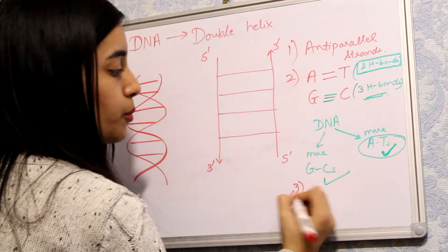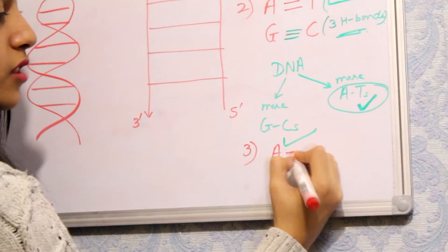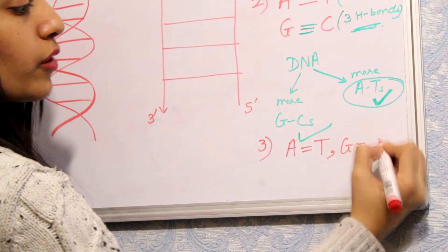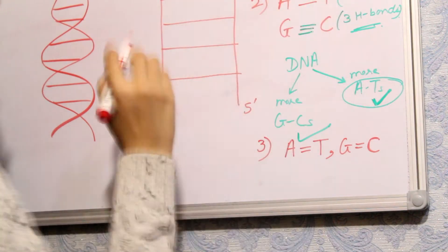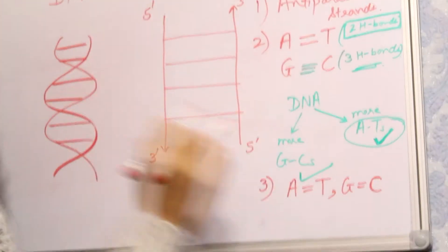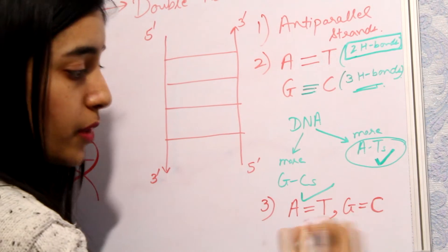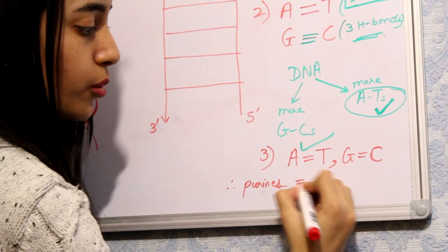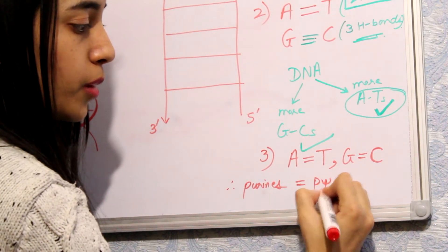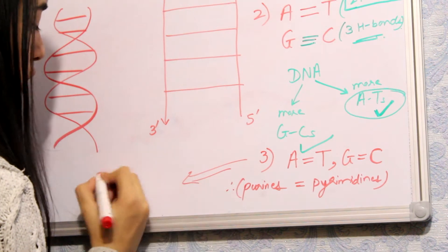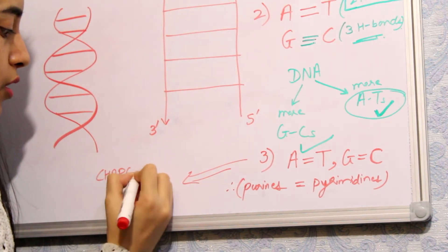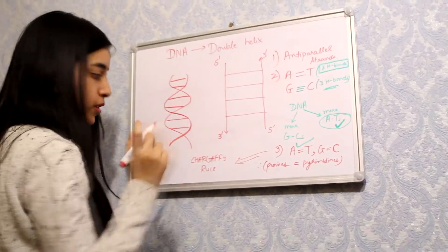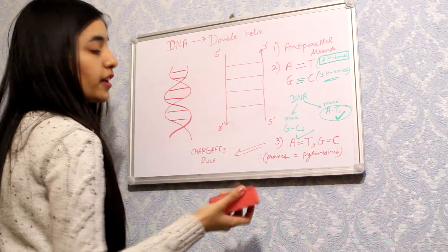Based on this, our third point is that the amount of adenine is always equal to the amount of thymine, and the amount of guanine is always equal to the amount of cytosine, because they always pair together. Therefore the total amount of purines is always equal to the total amount of pyrimidines — this is what we call Chargaff's rule.